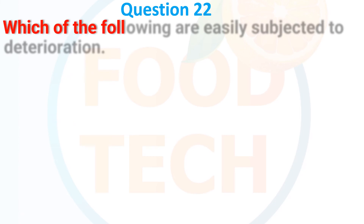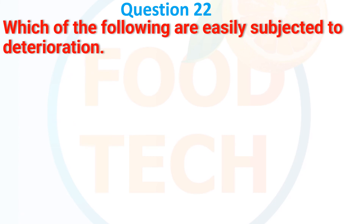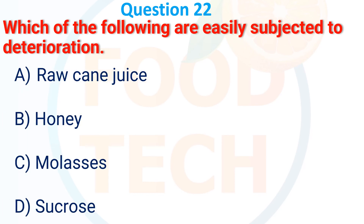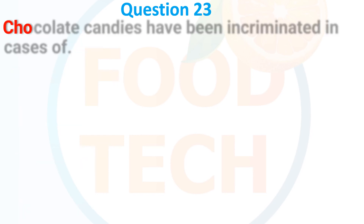Which of the following is easily subject to deterioration? A, raw cane juice; B, honey; C, molasses; D, sucrose. The answer is A, raw cane juice.